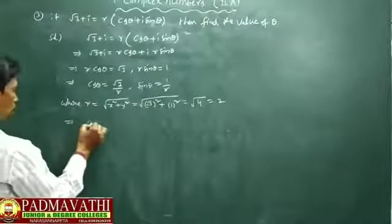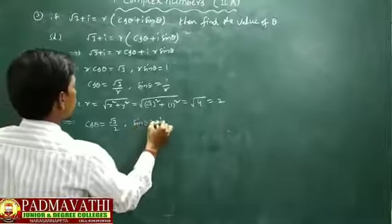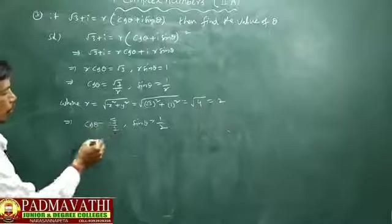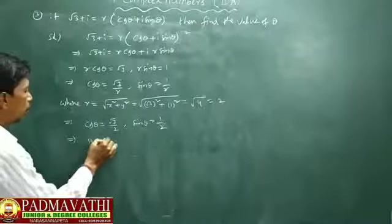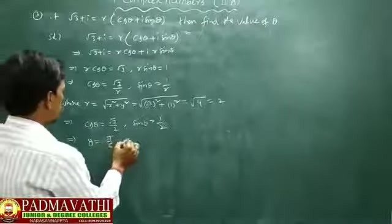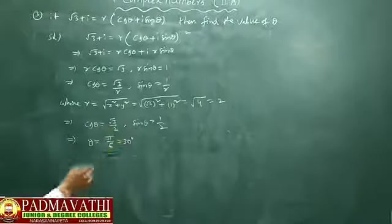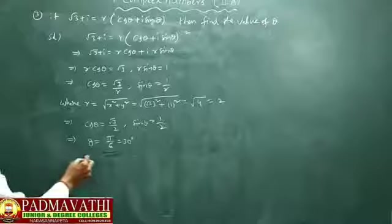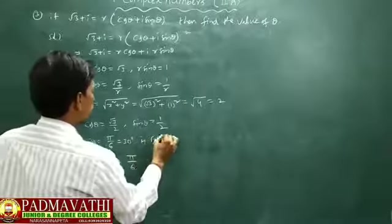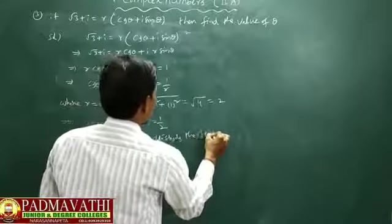So what is the value of θ? cos θ equals √3/2 implies θ equals 30 degrees. In radian measure, θ equals π/6. Verifying: π/6 satisfies both equations cos θ equals √3/2 and sin θ equals 1/2. Hence θ equals π/6, satisfying the above equations.